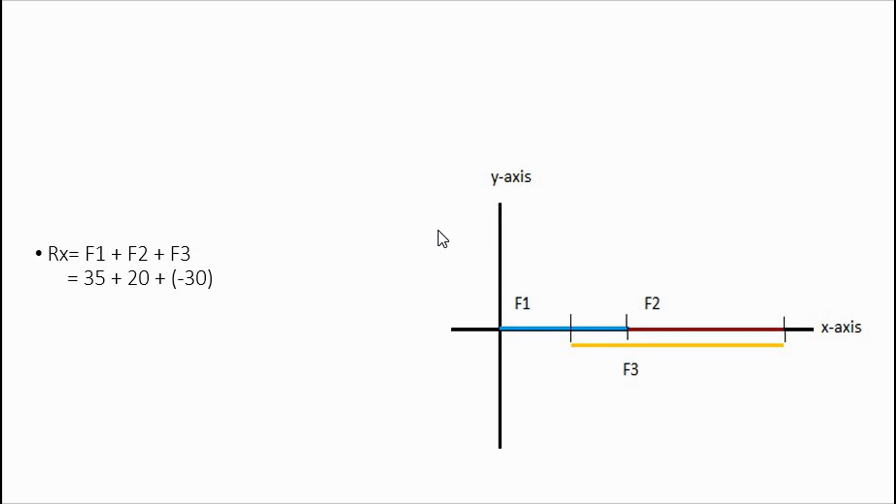The values are subbed in there, 35 plus 20 plus negative 30. And I'll leave it up to you to get that answer. Should be very, very straightforward.